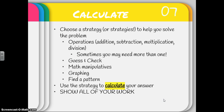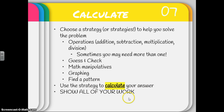Now I move on to the C in RICE — I need to calculate. When I go to calculate, I'm not just jumping right in for an answer. I need to choose a strategy, and sometimes I might need more than one to help me solve a problem. I could pick an operation — and sometimes I might need more than one: addition, subtraction, multiplication, division, or a mix of all of them. I can do a little guess and check, get some math manipulatives, try some graphing, or look for a pattern. Then I finally use my strategy to calculate my answer, and I can't forget — I need to show all of my work.